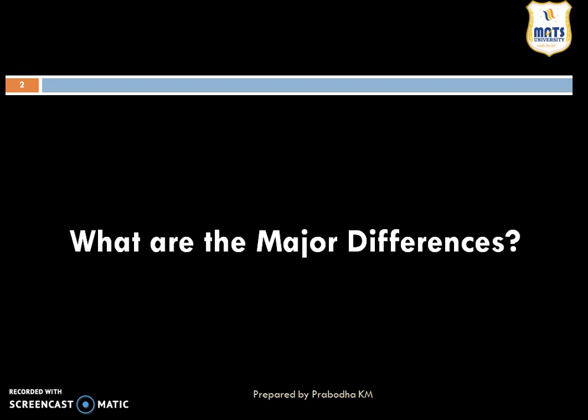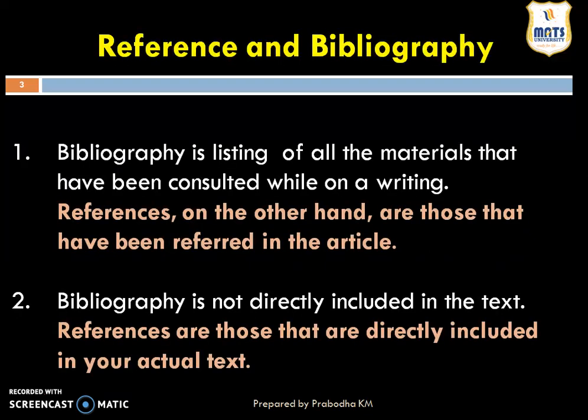What are the major differences between bibliography and references? The first point is that bibliography is a listing of all the material that have been consulted while on a writing. On the other hand, references are those that have been referred in the article.